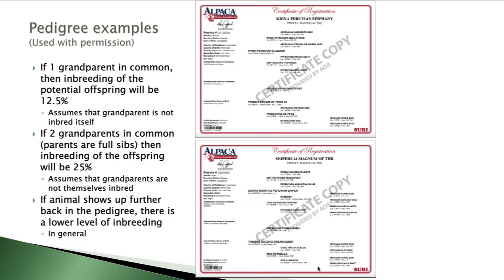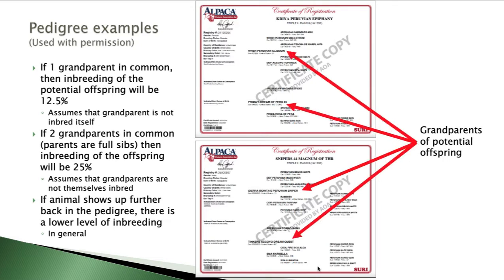One practical way I look at these is to examine the grandparents of the potential offspring — that is, the parents of Peruvian Epiphany and Magnum of THR — and see if any of their parents, which would be the grandparents of the potential offspring, are shared in common.